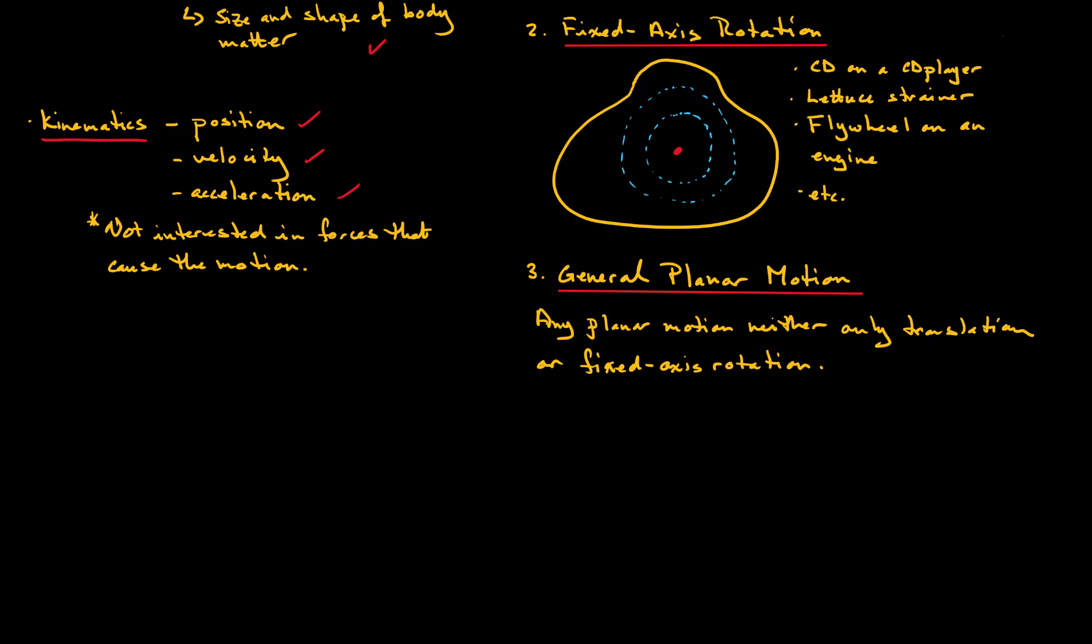And a good example of this is the following. Let's assume that we have a train—this is my idea of a train here—and it has some wheels over here and it's moving in this direction. Okay, so in fact one might think that the wheels on the train are undergoing fixed axis rotation.